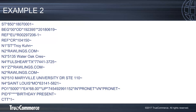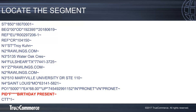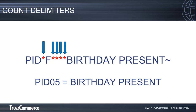Looking at a larger sample of data, let's determine what value is being sent in the PID05. First, we need to locate the PID segment in the data. Next, we need to count five delimiters. Here we can see that the PID05 is "birthday present".